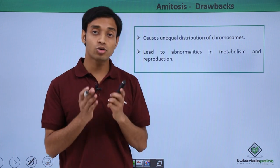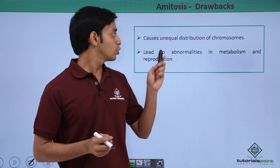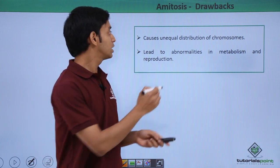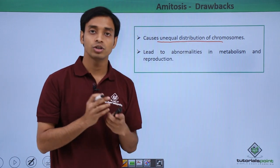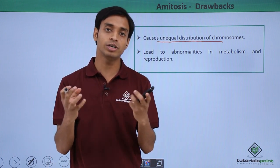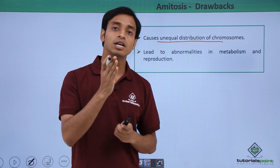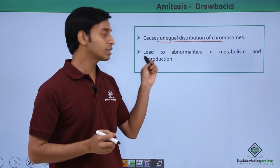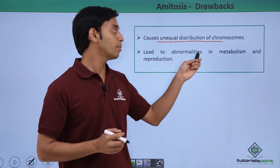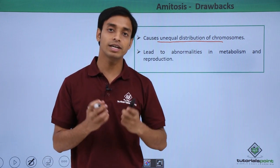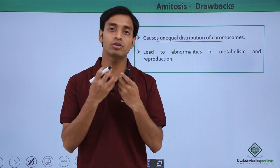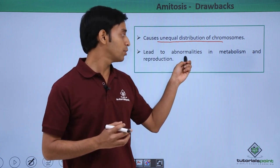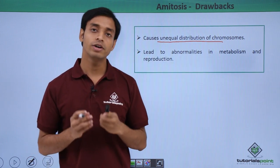Some drawbacks of amitosis include that since the nuclear membrane does not dissolve, it causes unequal distribution of chromosomes — the chromosomes are not equally distributed between the two daughter cells. Hence this is not an equational type of division like mitosis. This leads to abnormalities in metabolism and reproduction, as an equal amount of genes or chromosomes is not passed on to the two daughter cells.